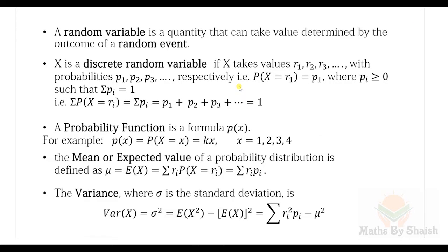Let's start. The first topic is a random variable. A random variable is a quantity that can take a value determined by the outcome of a random event. For example, if we throw two dice and calculate the sum or product of the numbers that appear on top, those are called random variables. We generally denote them by capital X or capital Y.